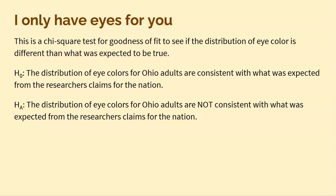Step one is we've got to write those alternative and null hypotheses. The null hypothesis is that everything's the way it should be: the distribution of eye colors for Ohio adults is consistent with what was expected from the researchers' claims from the nation. The alternative is that there is a difference — the distribution of eye colors for Ohio adults is not consistent with the rest of the nation.